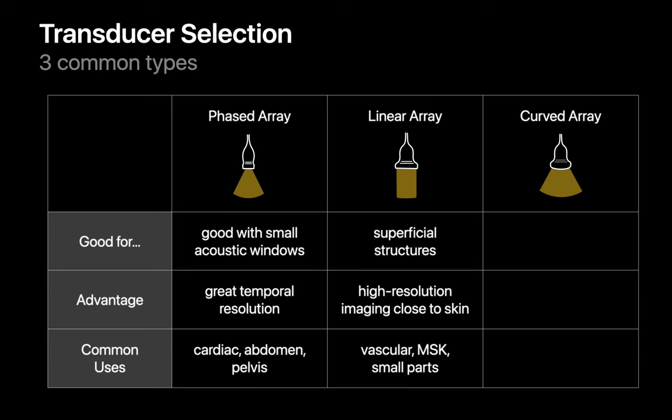Linear array transducers are excellent for superficial structures and can offer high-resolution imaging of tissues close to the skin. They provide a rectangular or parallelogram-shaped image. Although they provide high spatial resolution superficially, their ability to image deeper regions is limited. Linear array transducers are commonly used for vascular imaging, musculoskeletal imaging, and small parts imaging like thyroid, breast, and testicular scans.